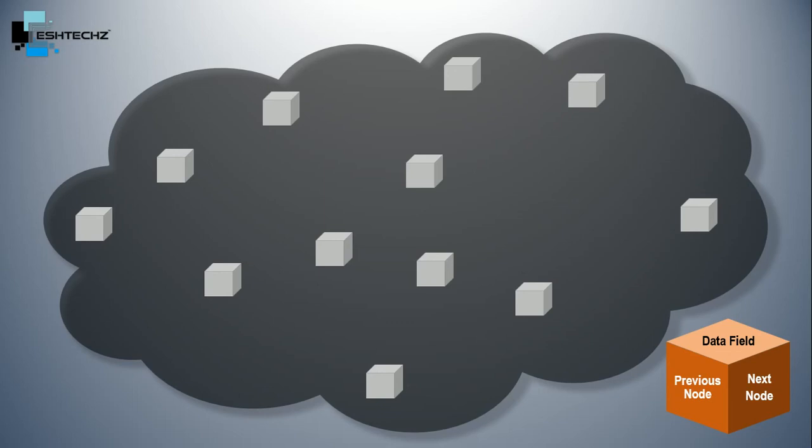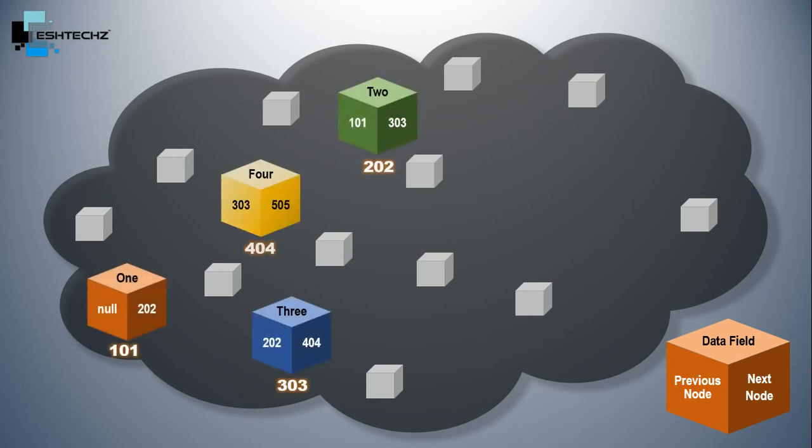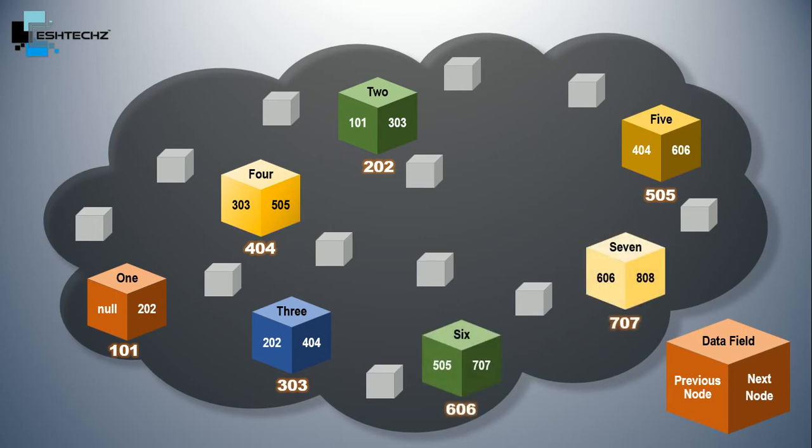And LinkedList is not sequential, so JVM will create the objects where it will find the space. So here as you can see, it created the objects which are scattered in the heap.